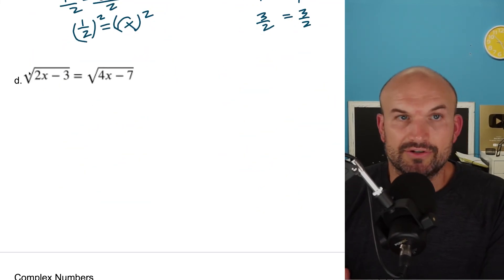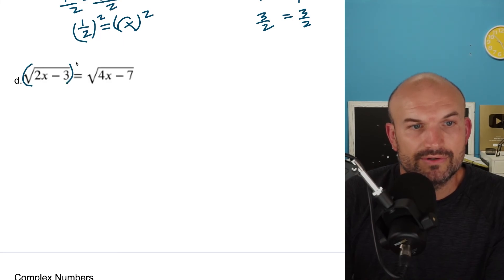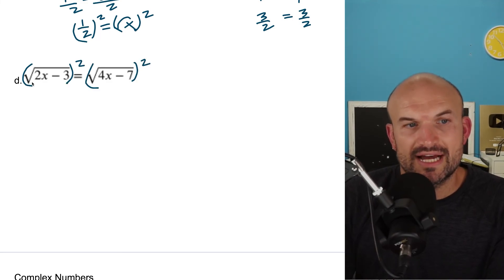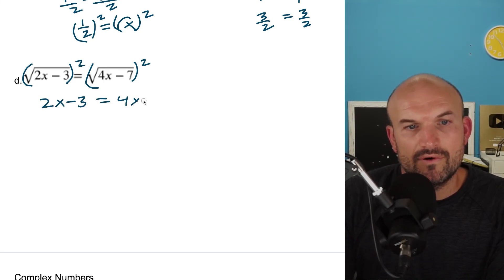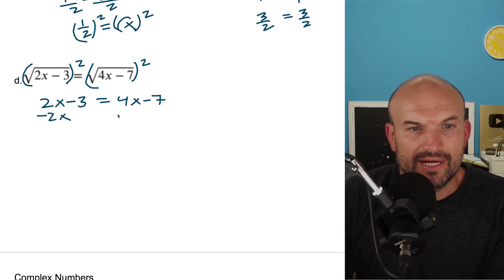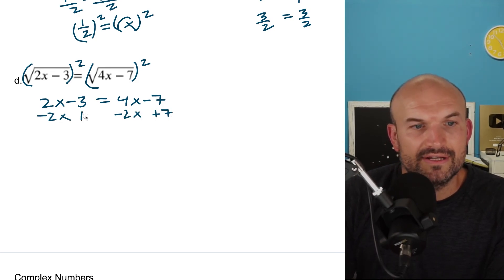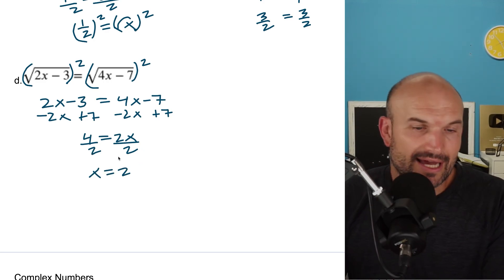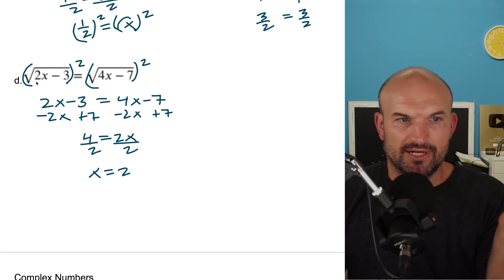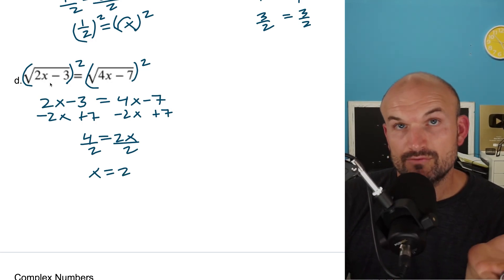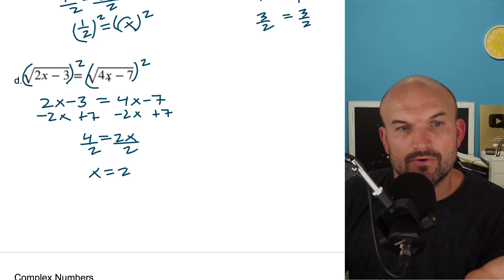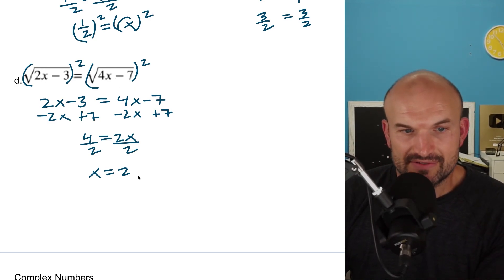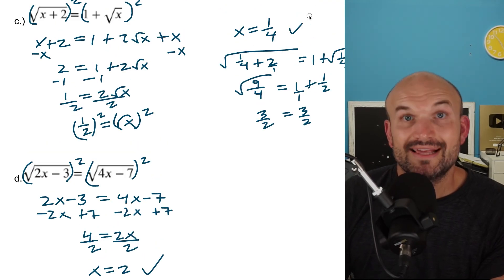This is another example of the same approach. We square both sides: 2x − 3 = 4x − 7. Adding 7 to both sides and collecting variables, we get 4 = 2x, so x = 2. Checking: 2(2) − 3 = 1, and √1 = 1; 4(2) − 7 = 1, and √1 = 1. Both sides equal 1, so the answer checks out.